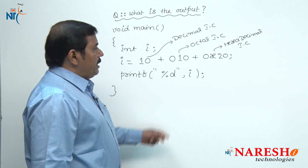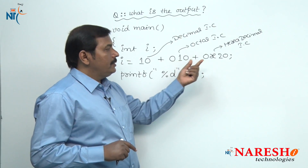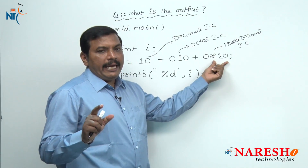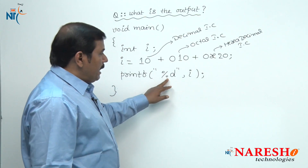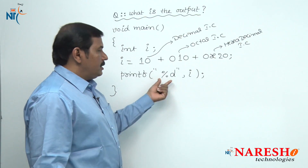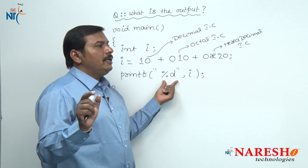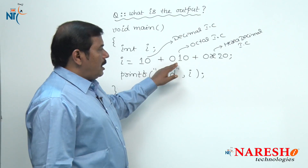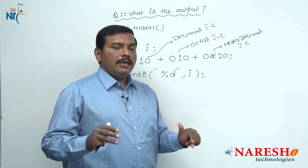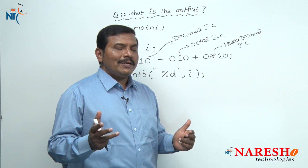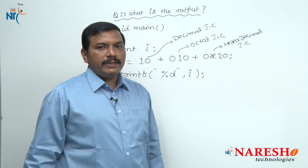Now let us translate the octal integer constant into decimal, and then translate the hexadecimal integer constant into decimal form. Because in the printf statement, the format specifier given is %d — decimal integer. That is the reason we convert octal and hexadecimal integer constants into their corresponding decimal integer constants, and then add all three integer constants.